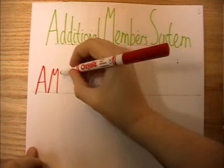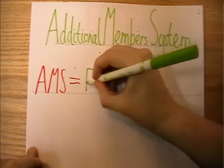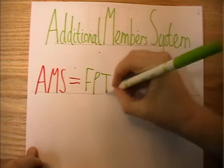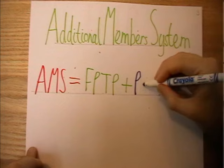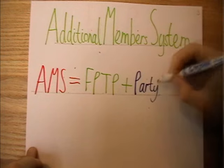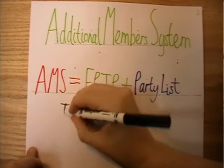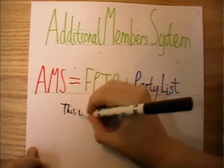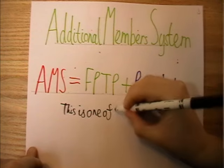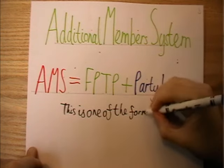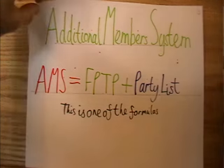The voting system used is called the Additional Members System, or AMS for short, and it's a hybrid system, meaning that it's made up of two other voting methods: first past the post and the party list. We're going to learn about those two first — and don't worry, as we do use them in Scotland too, just for different elections.